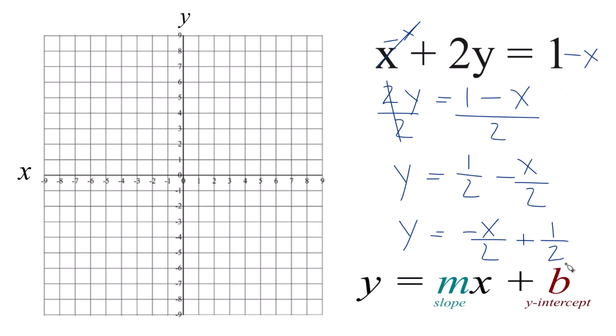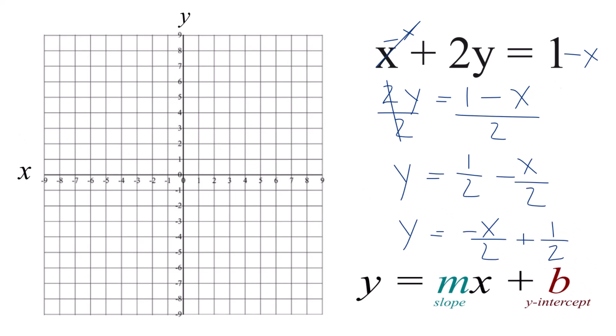So what we'll do is we have our y-intercept here. It's 1 half. So we can go to the graph here and at 1 half on the y axis, this is where we cross our line. We'll cross the y-axis. We'll put a point. That's our first point.